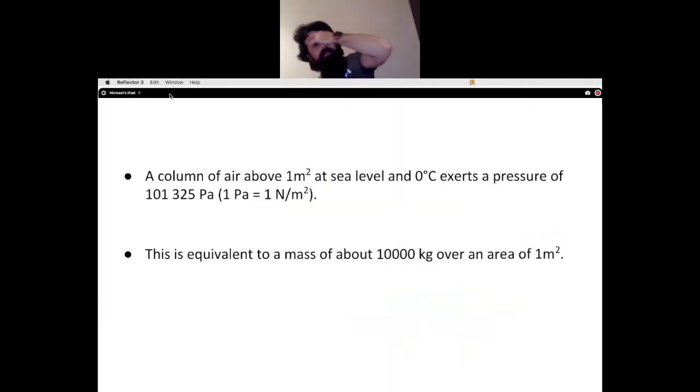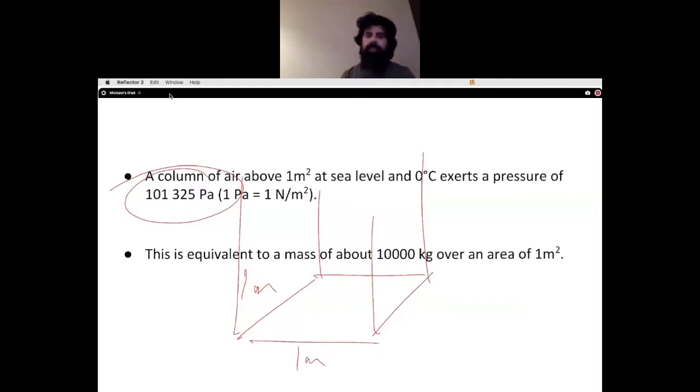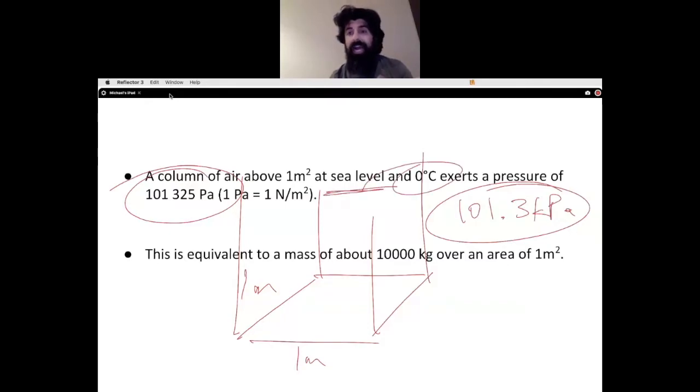If we were to slot off one meter by one meter at sea level, a column of air at zero degrees Celsius will exert a pressure of 101,325 pascals. That's equivalent to 101.3 kilopascals, and this is a very valuable pressure unit to remember. This is considered the standard temperature and pressure at zero degrees Celsius when we are at sea level.